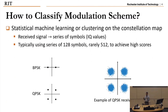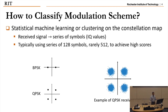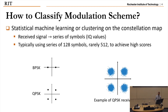How does modulation classification work? Typically, the receiver uses a statistical machine learning approach or clustering on the constellation map to figure out how many symbols that modulation scheme has. It receives the signal, converts it to a series of symbols with IQ values — typically using around 228 symbols, sometimes up to 500 — and achieves higher accuracy. For example, if there are two classes like BPSK and QPSK, the receiver can examine the constellation map and quite easily identify the modulation scheme.